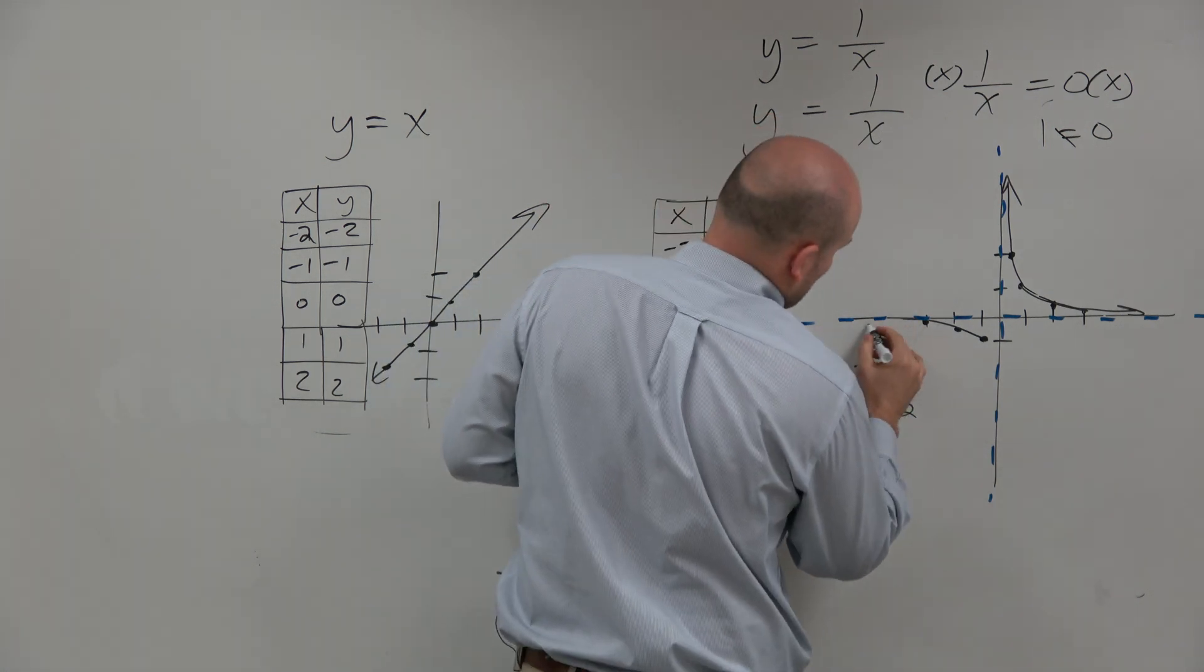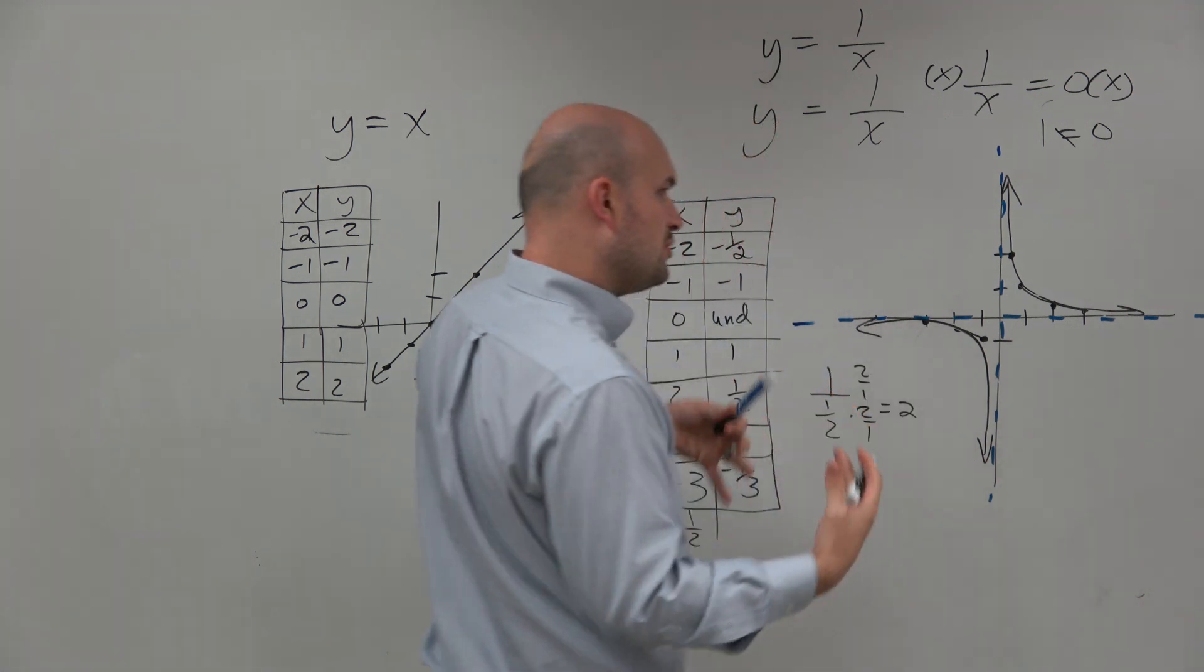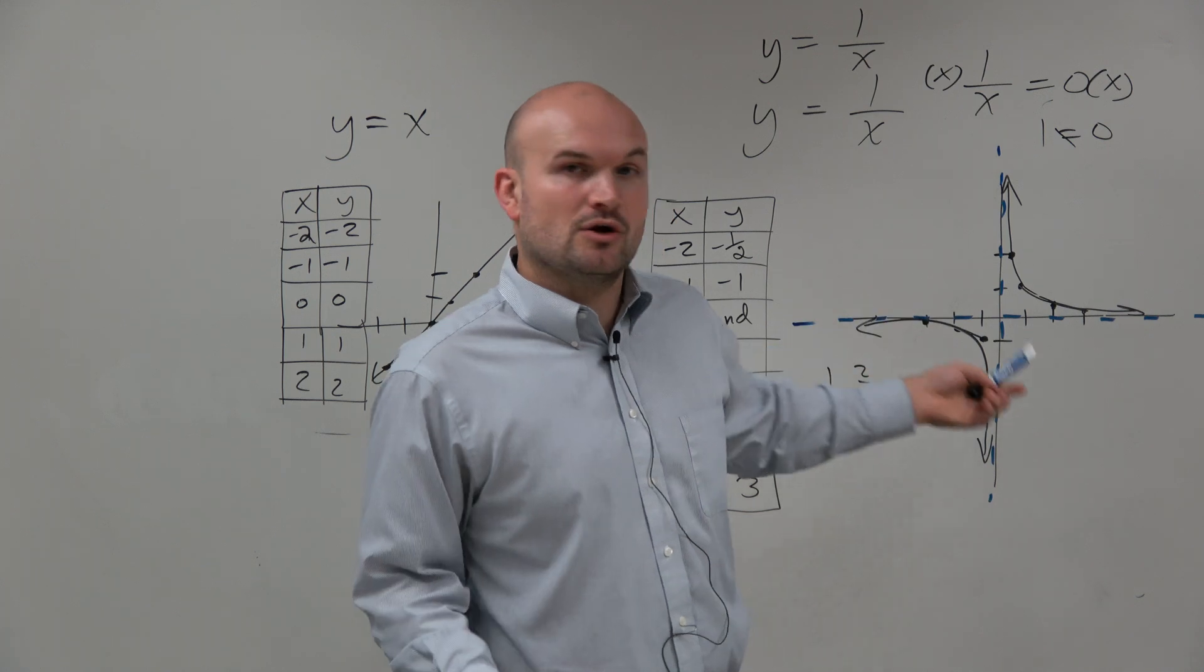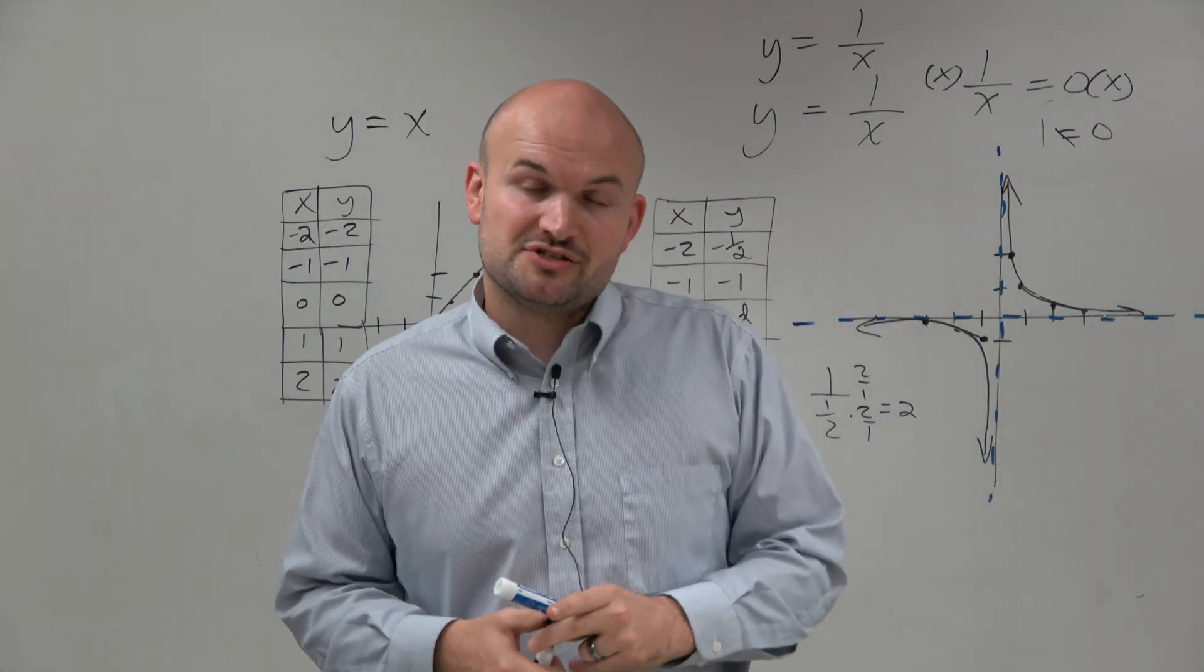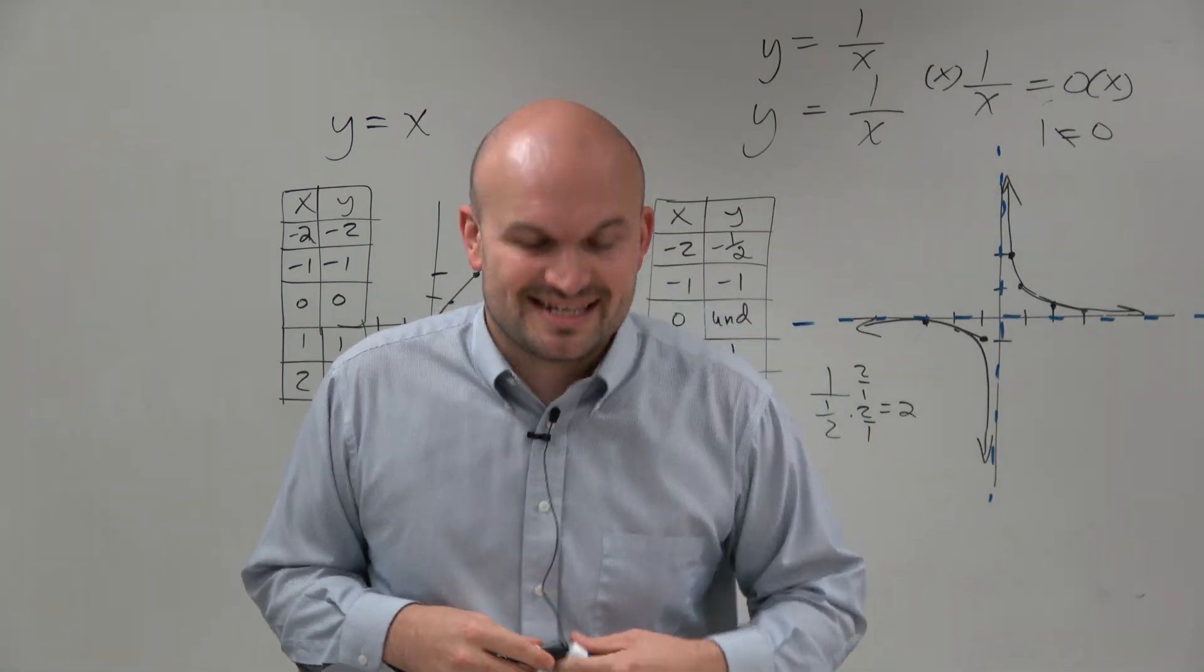So the shape of the graph is a hyperbola. Basically, you have these two boomerang-looking figures that are approaching your vertical and your horizontal asymptotes. So there you go, ladies and gentlemen. That is your basic introduction to the reciprocal function and its graph.